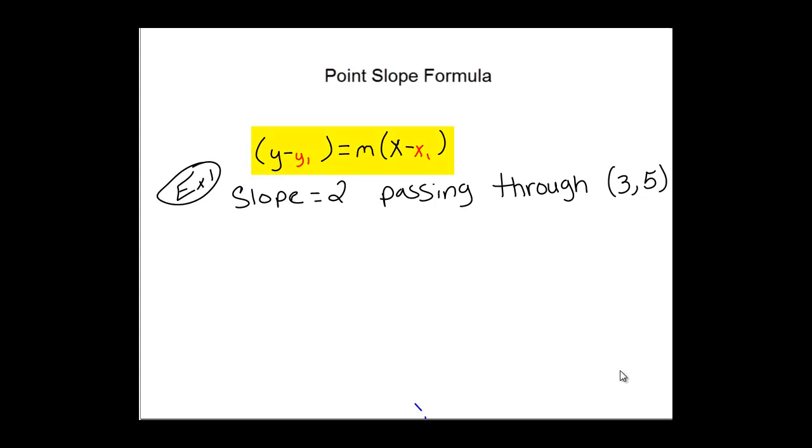Example 1, we have a slope of 2 passing through the points 3 and 5. Slope being 2, passing through the points 3 and 5, x and y.